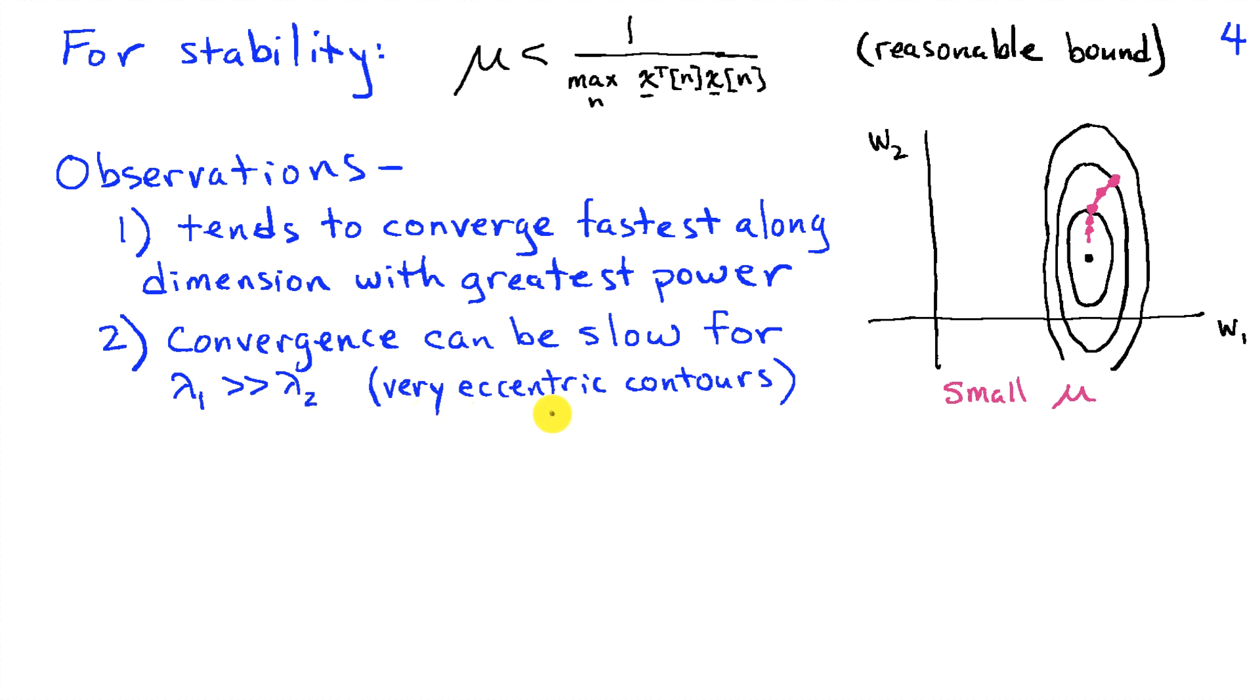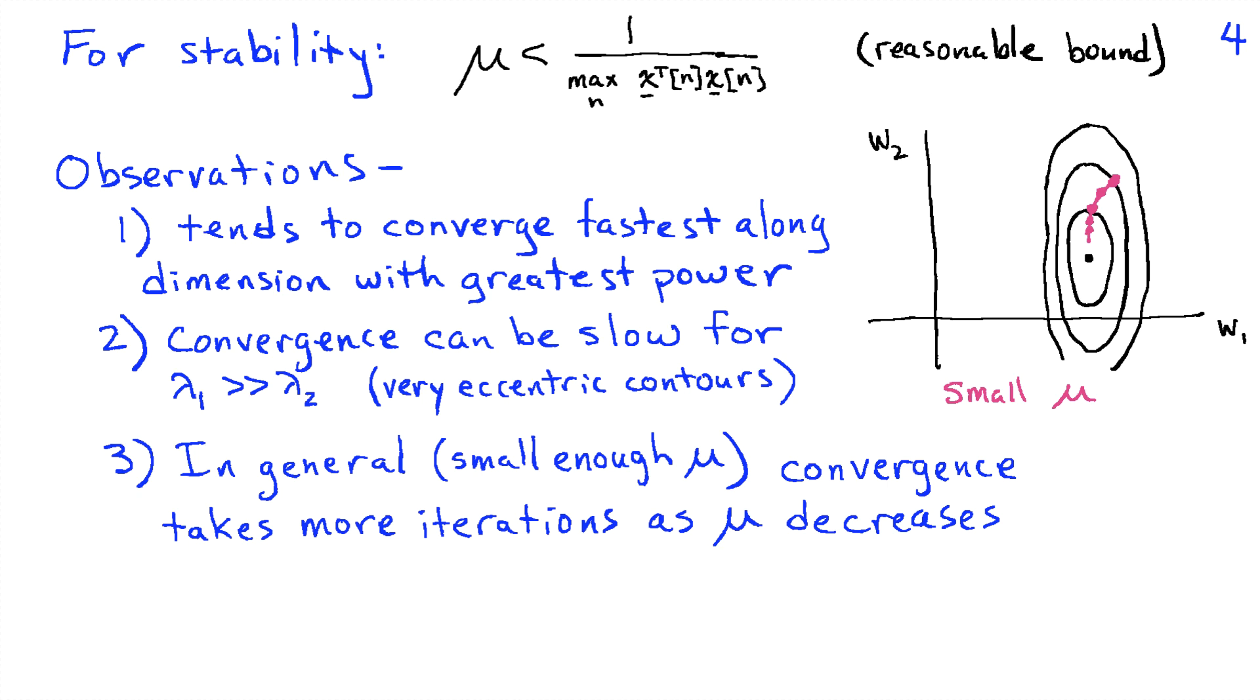This points out that if there's a wide dynamic range or a large disparity in the values of lambda 1 and lambda 2, we end up with very eccentric contours, and then convergence can be slow to the optimum because we have to take sufficiently small steps that we don't go up the other side of the bowl, and yet in the w2 direction, we're not making much progress because the slope is fairly shallow there.